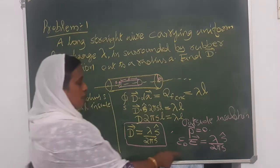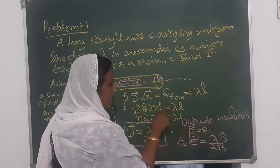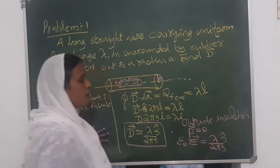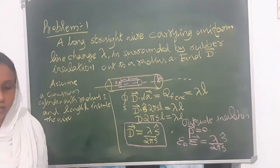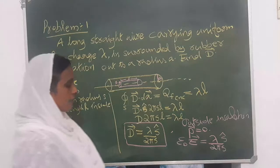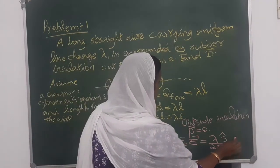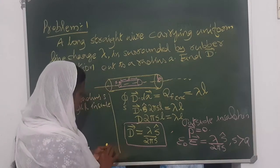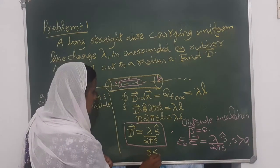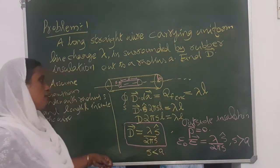So in this context, the electric field outside the insulation is given by lambda by 2 pi epsilon 0 S. For S greater than A, this is for S greater than A. This is for S less than A.